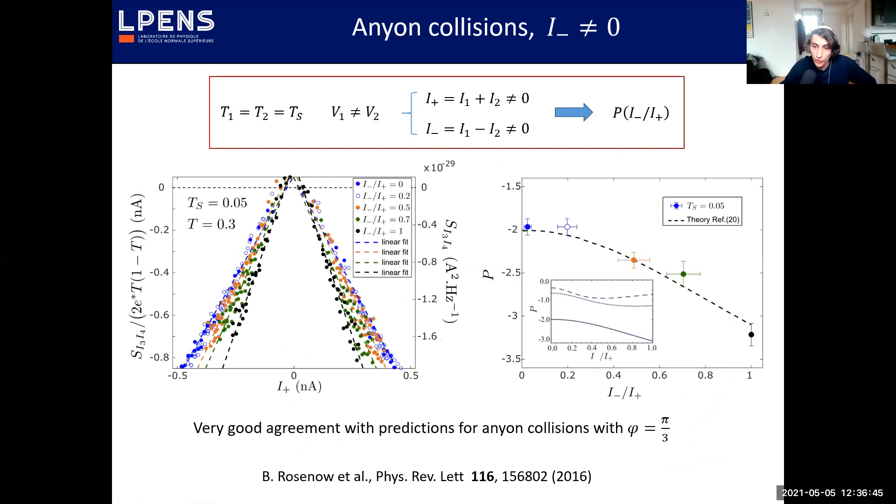Another thing that has been achieved is, so this is a calculation from the Rosenow paper of the variation of this pseudo-final factor with the imbalance of the collider. To do that we keep the same transmission at the input but we let V1 and V2 to be different so here the difference I_- is no longer zero. Here are the results for different imbalance. The blue one will be the balanced collider with the slope minus 2 and you see that as you imbalance you will have more and more negative cross-correlation. If you fit it with the prediction from the Rosenow paper we are in very good agreement with anyon collision for the Laughlin state and a phase π/3.